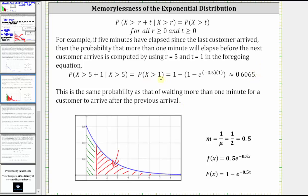Notice how this probability is the same as the probability of waiting more than one minute for a customer to arrive after the previous arrival. So the five minutes that elapsed does not affect the probability the next customer will arrive in more than one minute.